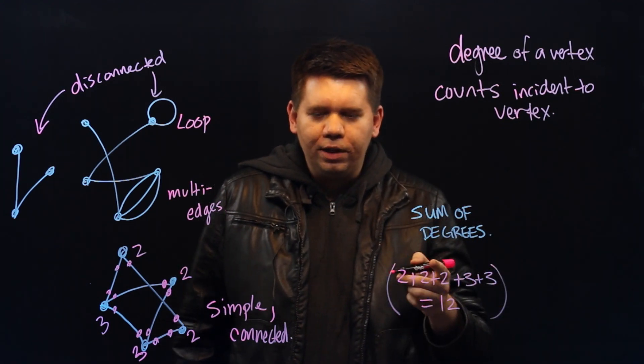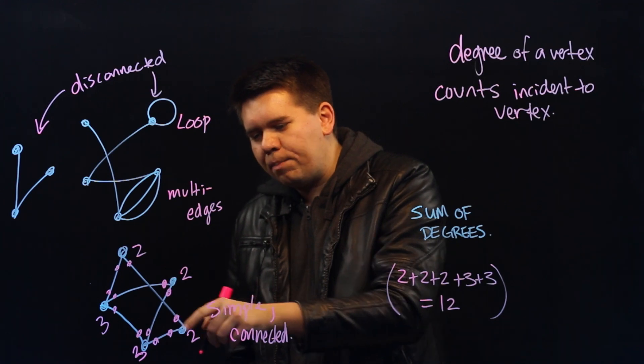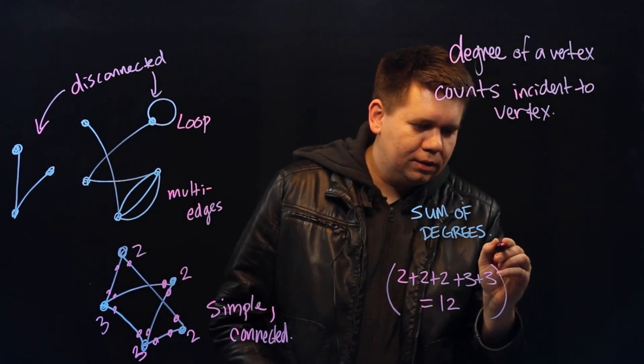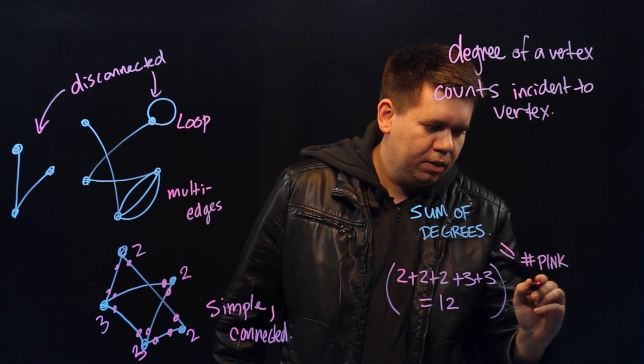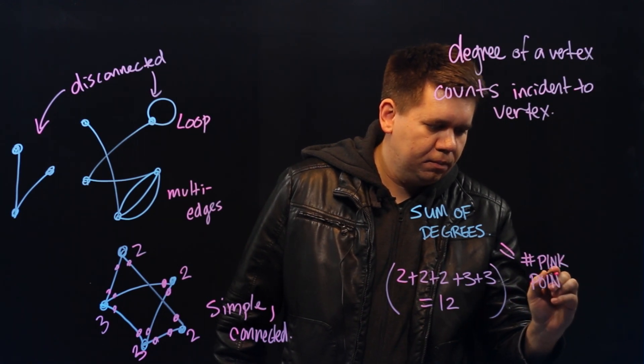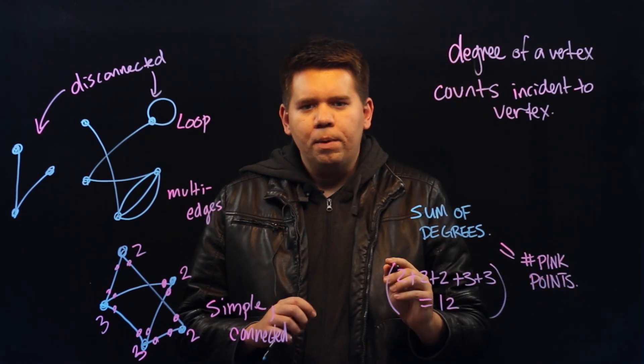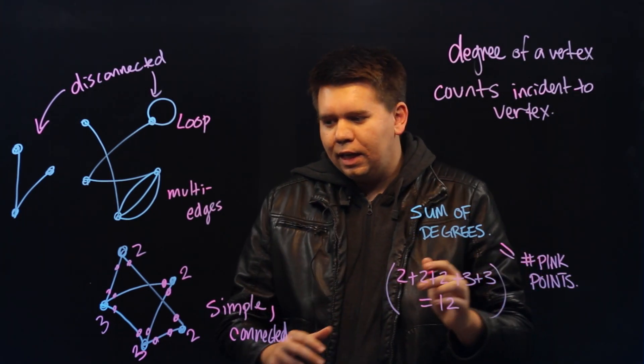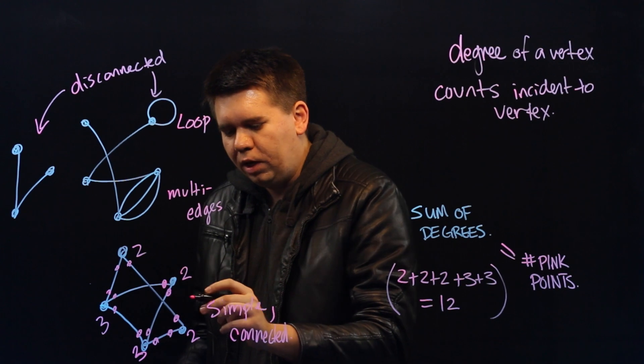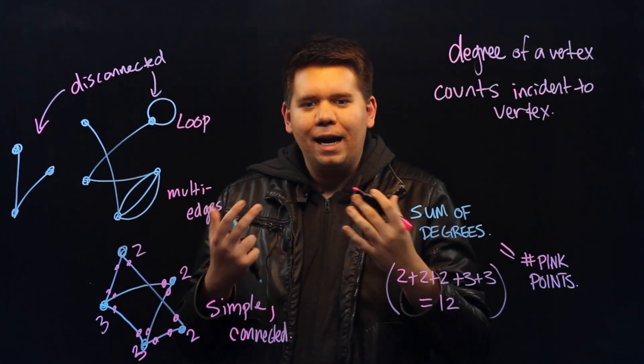Notice, counting the sum of the degrees is the same as counting the total number of pink points. It's equal to the total number of pink points. But maybe you notice there's another way to count the number of pink points. Instead of noticing a cluster of two, and two, and three, and adding them up,